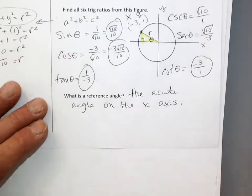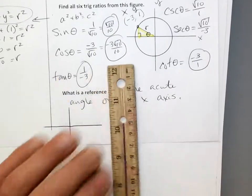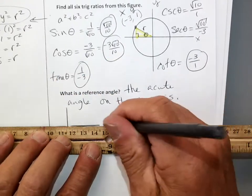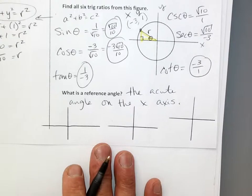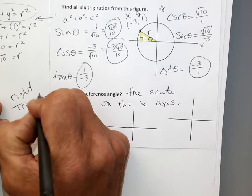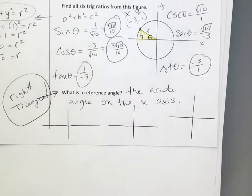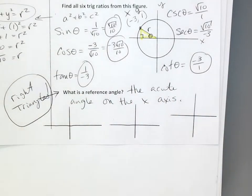I want to draw a couple of pictures because a lot of kids get really confused until I draw pictures. The reason we do a reference angle is because technically everything's done for right triangles. All of this unit circle stuff really comes back to right triangles. Remember how we found these coordinates? We made a right triangle. All of these values come from a right triangle.